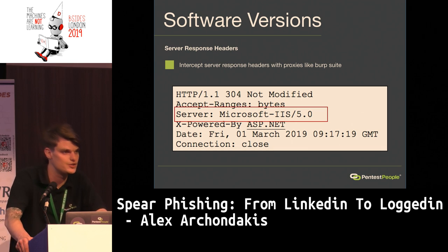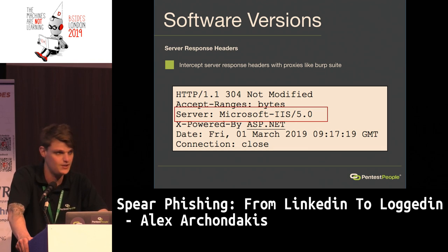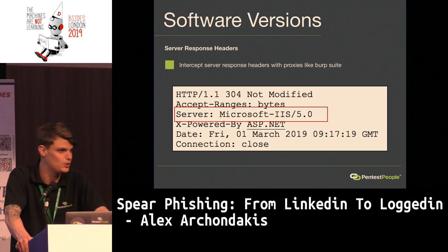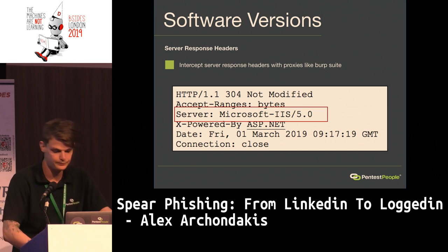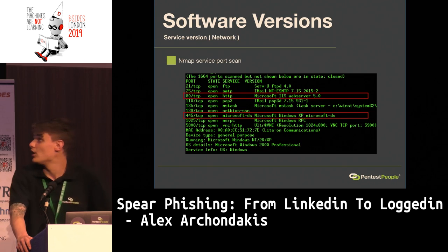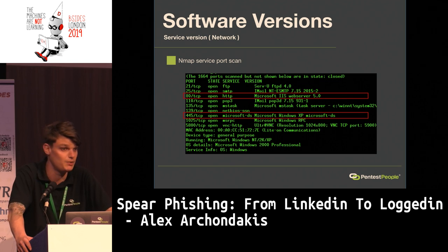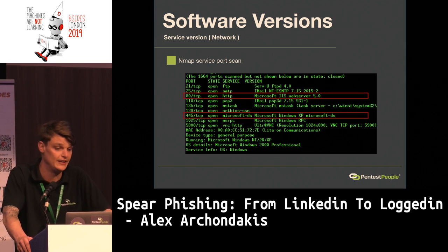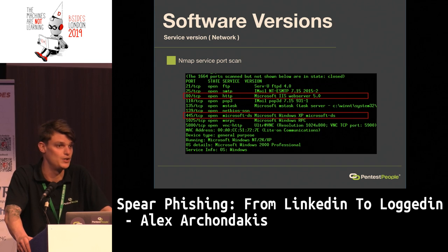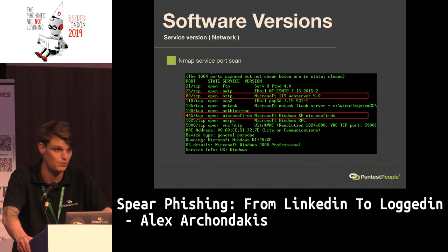Software versions are not only sent in server response headers. You can also find them by running a port scan against the network layer using tools such as Nmap. Here's an example of an Nmap scan showing IIS web server 5.0, and we can also see that port 445 TCP is open — the service that was exploited during the NHS WannaCry attacks.